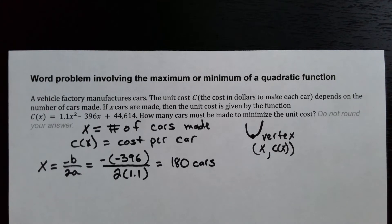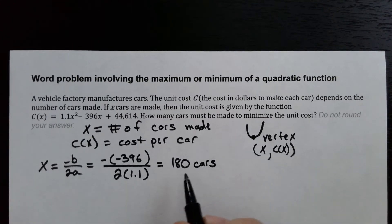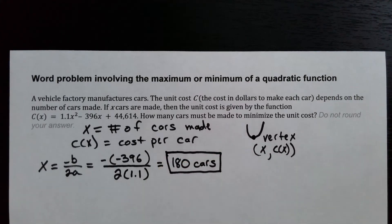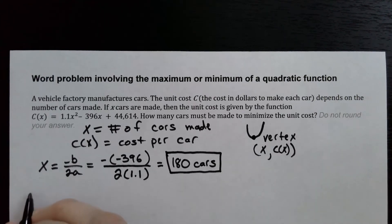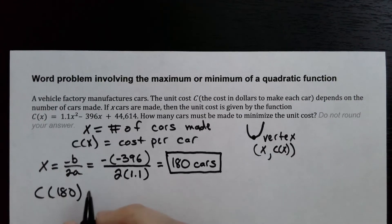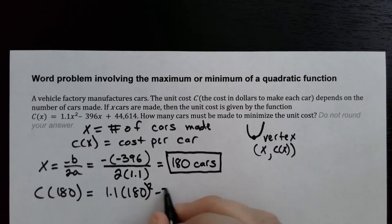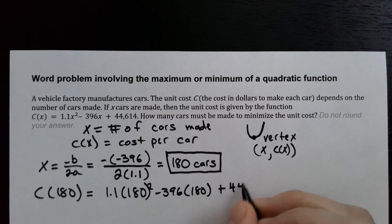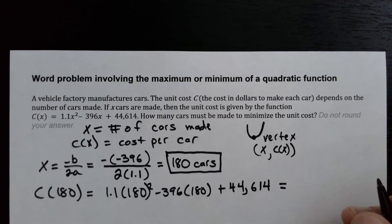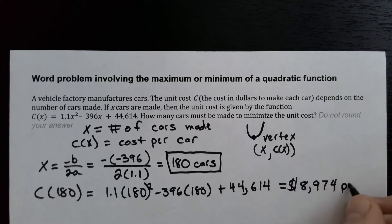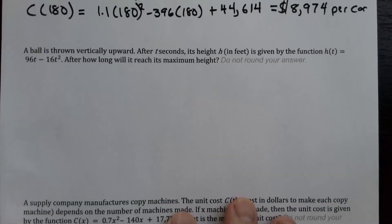If they ask what the minimum cost is, we plug 180 into the function in place of X. So C of 180 equals 1.1 times 180 squared minus 396 times 180 plus 44,614, which works out to $8,974 per car. But the answer to this question is 180 cars.